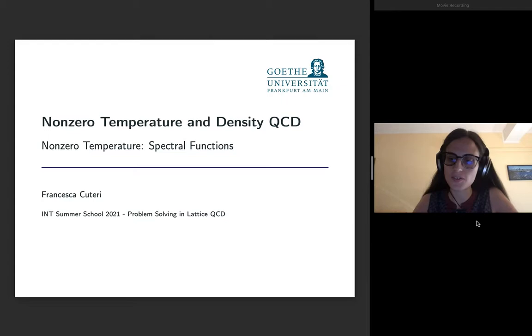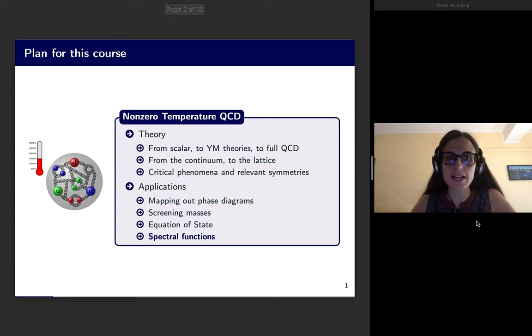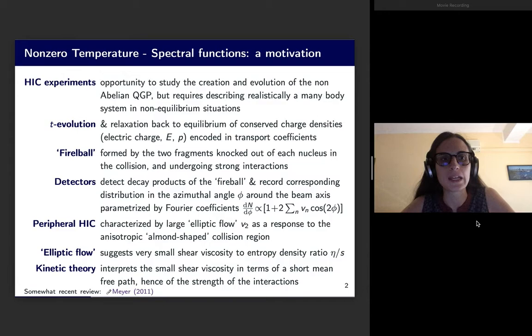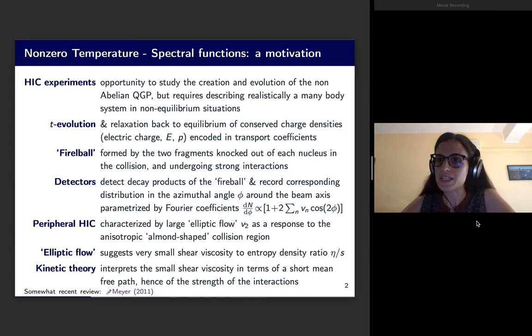Hi again everyone. In this video the subject will be spectral functions. This is the last application we will be considering in the context of non-zero temperature QCD on the lattice. I would like to start by introducing some nomenclature and some phenomenology about the quark-gluon plasma, which will lead us to the definition of what a spectral function is and why it is so crucial to be able to measure it.